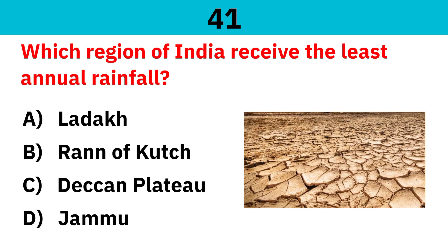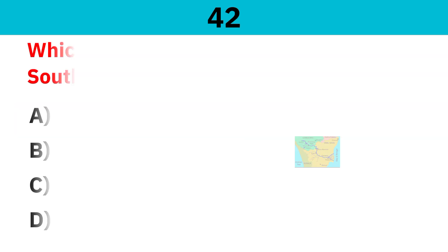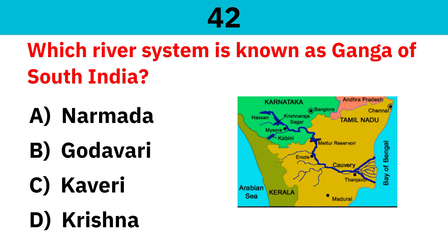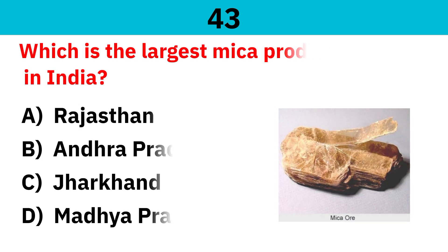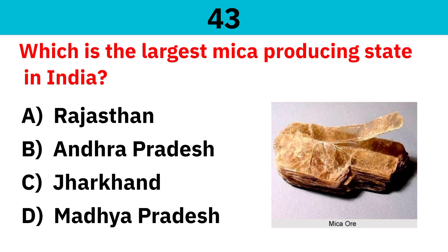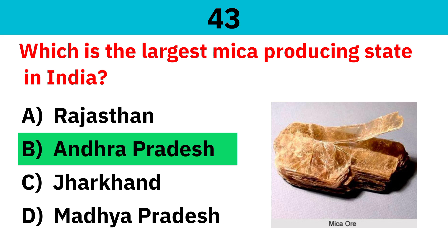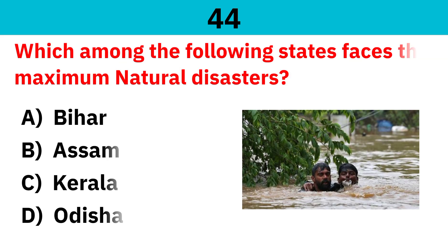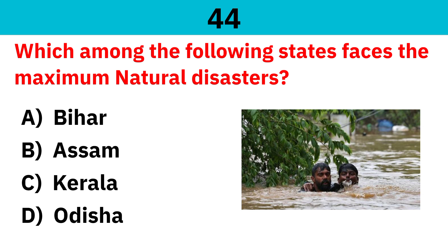Which region of India receives the least annual rainfall? Correct answer is Ladakh. Which river system is known as the Ganga of South India? Correct answer is Kaveri. Which is the largest mica-producing state in India? Correct answer is Andhra Pradesh. Which among the following states faces the maximum natural disasters? Correct answer is Odisha.